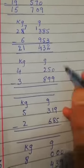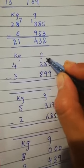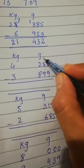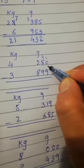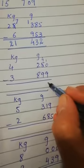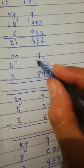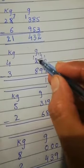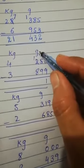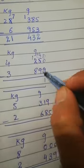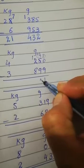Zero me se nine hum less nahin kar sakte so humne five me se one liya. Yeh ten ban gaya. Idhar four raha gaya. Ten me se nine one. Four me se nine hum minus nahin kar sakte so humne two se liya. Idhar one raha gaya. Yeh fourteen ban gaya. Fourteen me se humne nine minus karne hain. Five aa gaya.